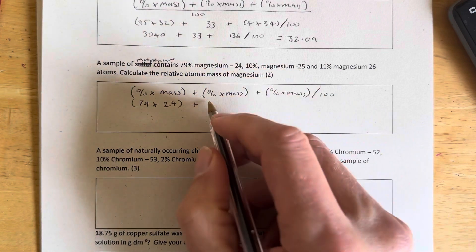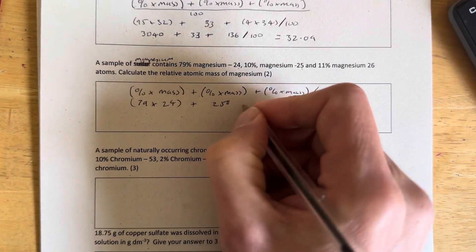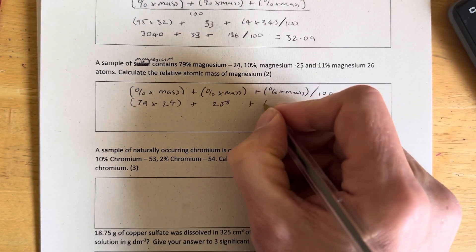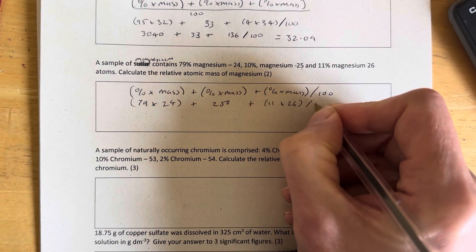Plus 10 times magnesium-25. 10 times 25. Well, 10 times 25 is 250, so I'm just going to write 250. Plus 11 times 26. So 11 times 26 divided by 100.